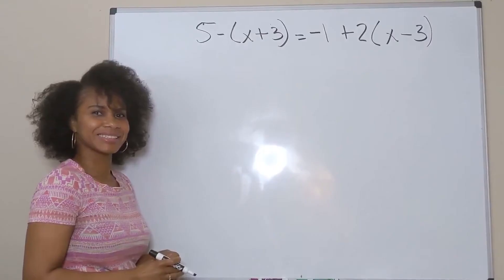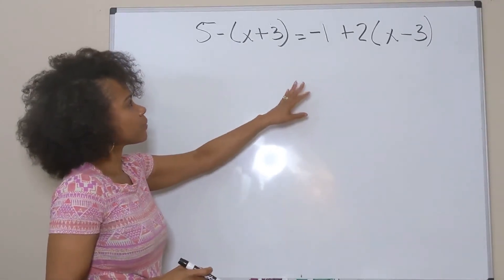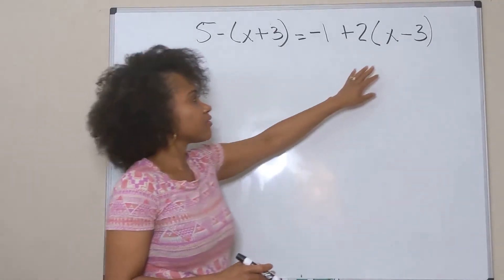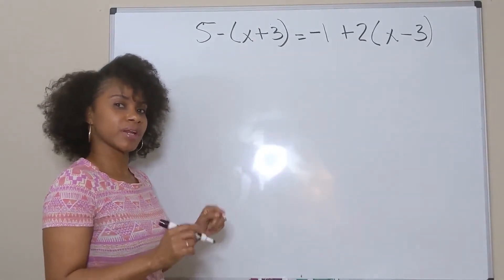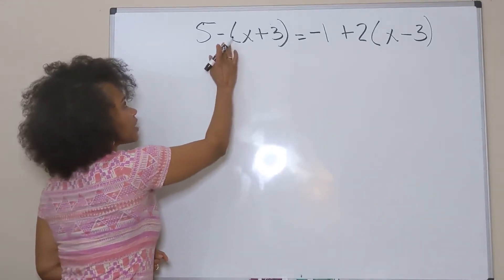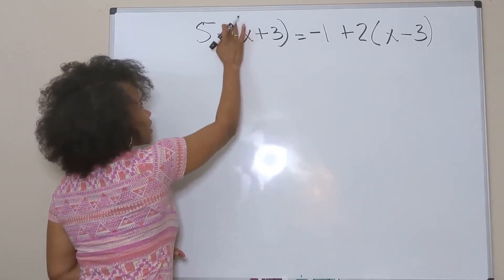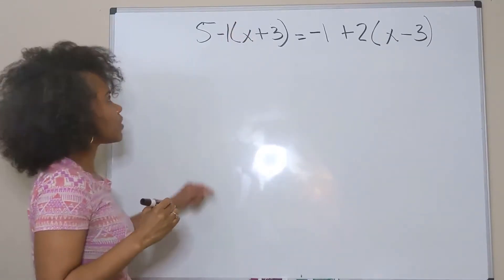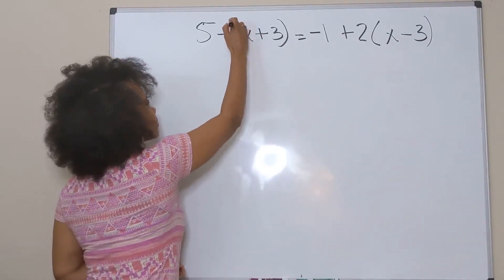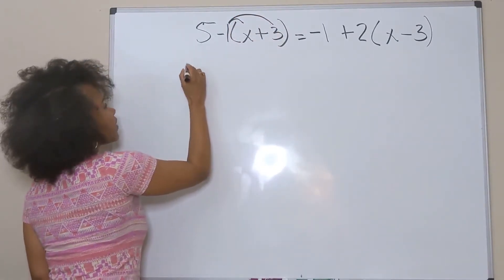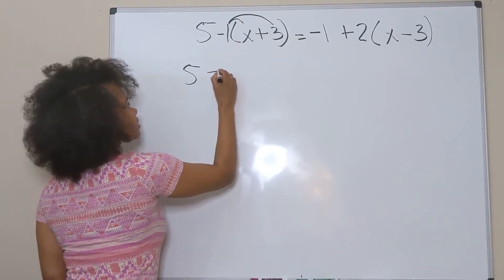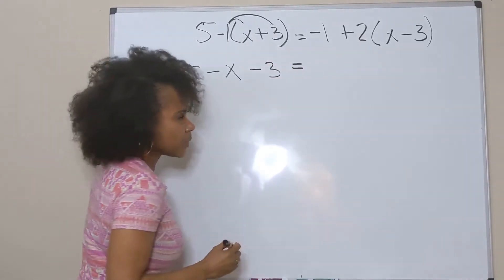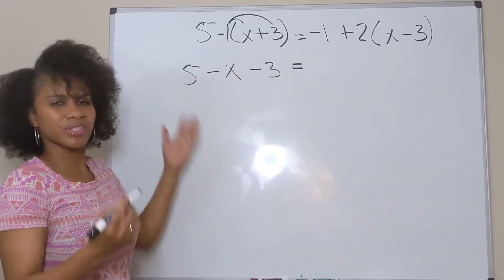The third problem has parentheses on both sides, so again we use the distributive property. On the left I have minus (x plus 3) — whenever you don't see a number in front of parentheses, there is an understood 1, so I distribute a negative 1. Bringing down the 5: negative 1 times x is negative x, and negative 1 times 3 is negative 3.